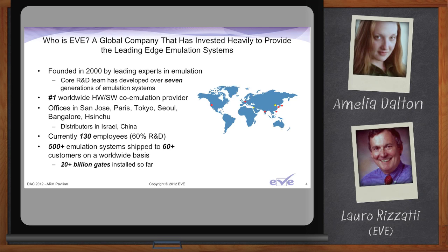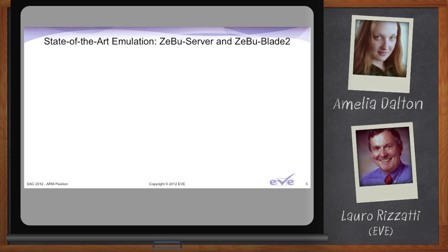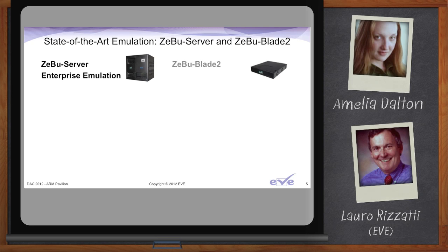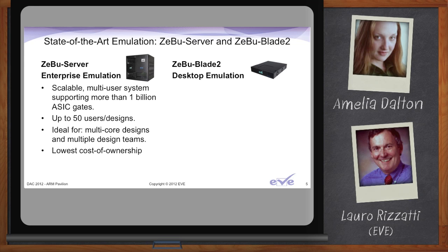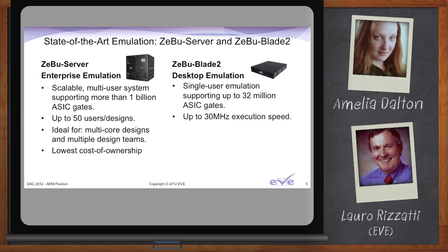Today we have two machines: the Zeebo Server, which is essentially an enterprise-type emulator, and the Zeebo Blade 2, which is more of a desktop emulator. The Zeebo Server gives you maximum scalability and capacity exceeding 1.5 billion gates. It's a multi-user machine, ideal for any type of design, especially large designs. The Zeebo Blade 2 is a single-slot, single-user machine with a maximum capacity of 32 million IC gates and speeds exceeding tens of megahertz. Both offer the lowest cost of ownership in the industry.